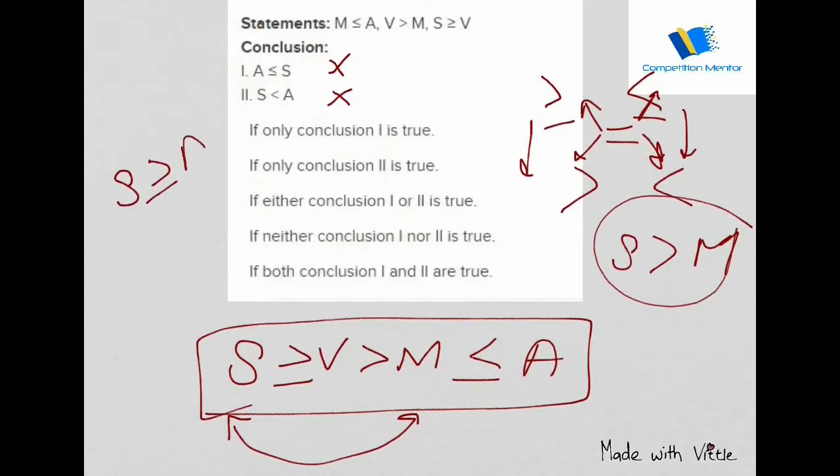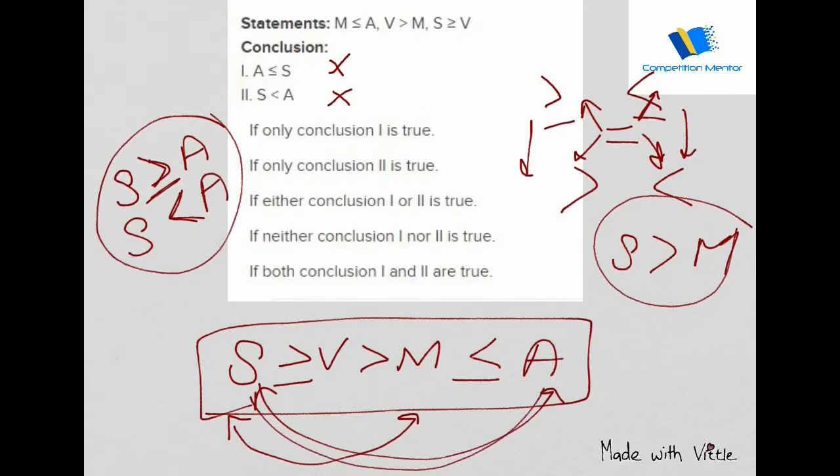But you can see if you write S is greater than equal to A and one part S is less than equal to A, but here you see there is no logical connection between these two. Whenever these kind of situations happen, like you see the reverse and there is no connection in between, you will mark the answer either conclusion one or two is true.